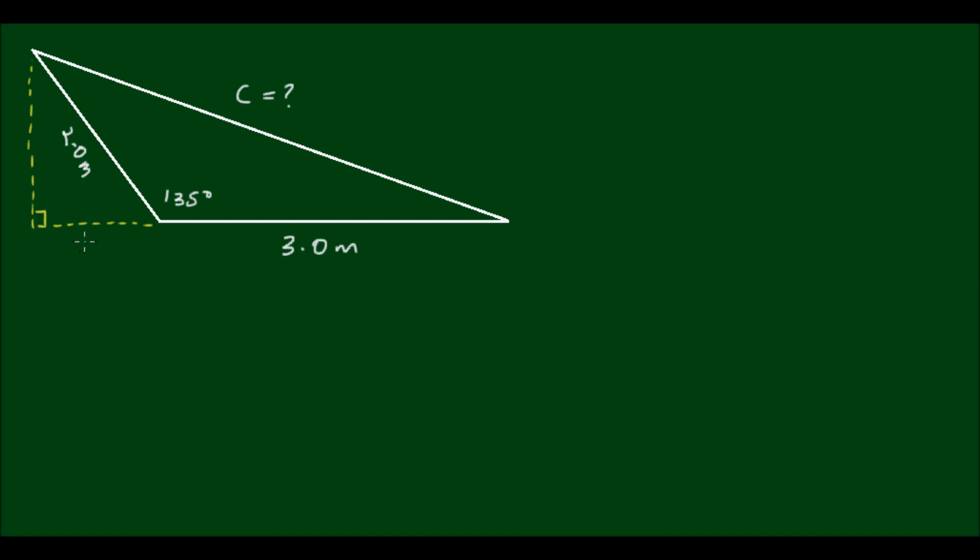I'll label this additional horizontal length as x. I should be able to find this angle θ, because I know that 135 degrees plus θ equals 180, since the angle of a straight line is 180 degrees. This means that θ equals 45 degrees.